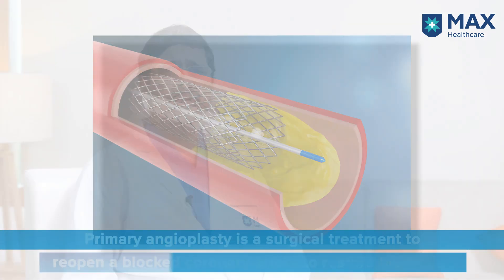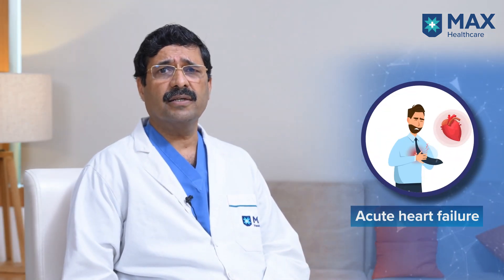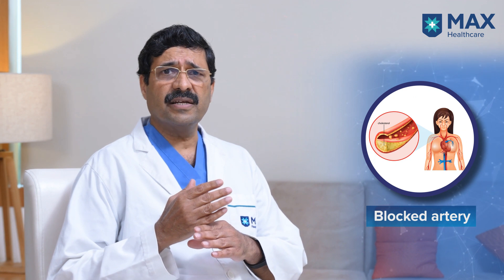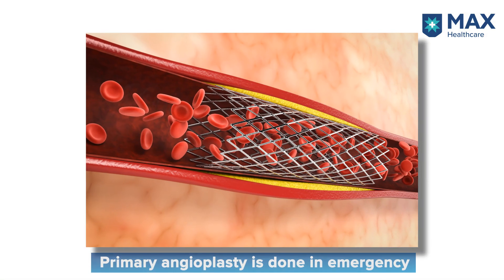Coronary angioplasty can be of two types. One is when someone is getting an acute heart attack because of sudden occlusion of one of the blood vessels supplying blood to the muscles of the heart. When you open a totally occluded artery in a setting of severe chest pain, which is an emergency, this type of angioplasty is known as primary angioplasty.